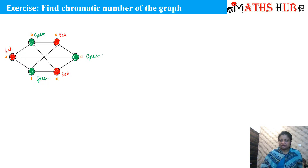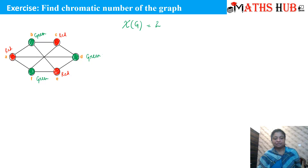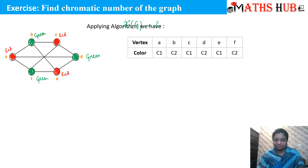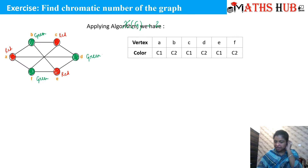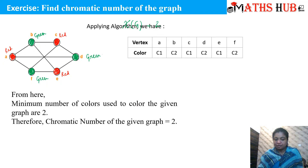So all the vertices are now colored. What is chi(G) for this graph? Chi(G) for this graph becomes equal to 2. We have written the vertices A, B, C, D, E, F in the form of a table. We gave color C1 to vertex A, C1 to vertex C, and C1 to vertex E. Then we started with a new color C2: we marked vertex B with C2, vertex D with C2, and vertex F with C2. This is how the chromatic number of this graph becomes equal to 2.